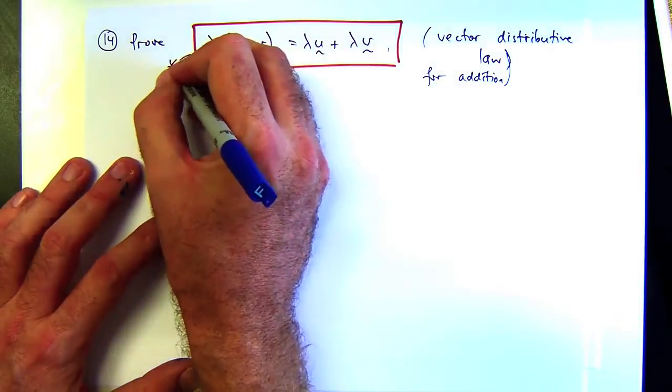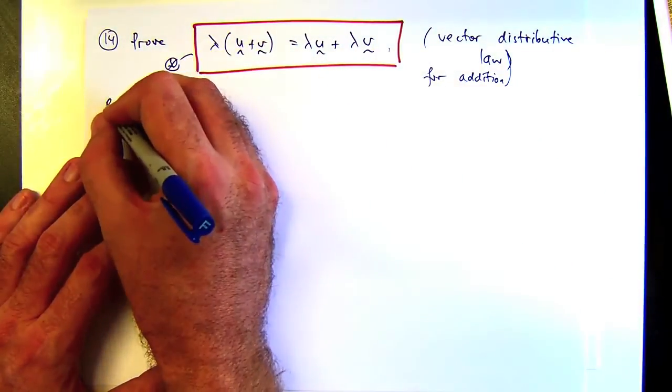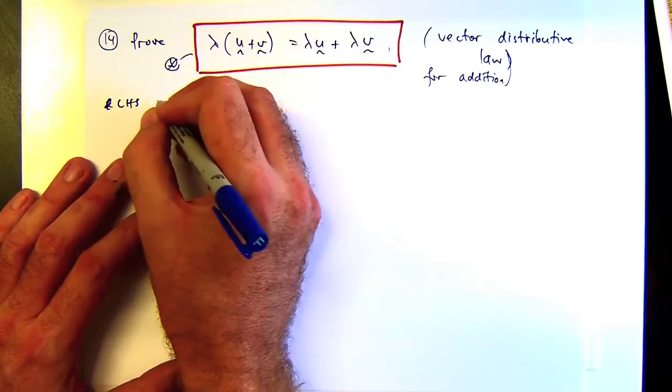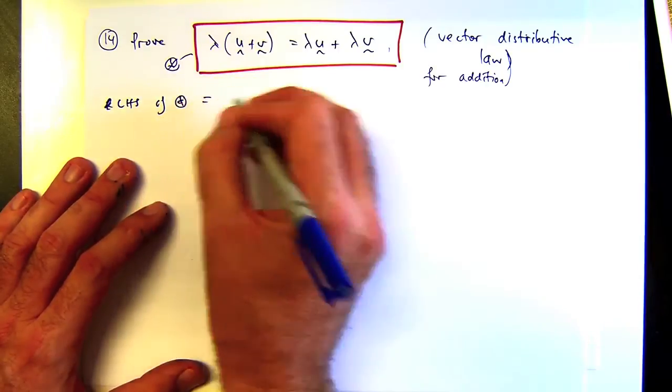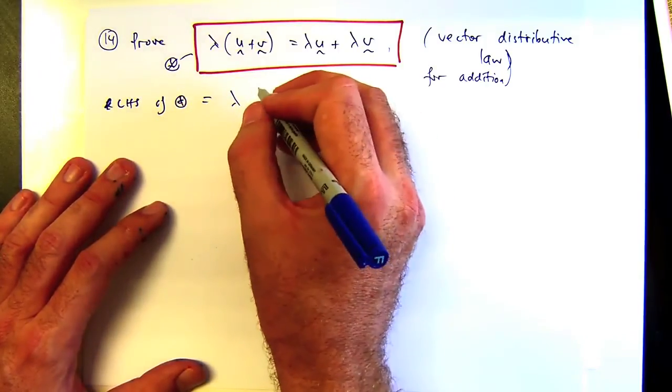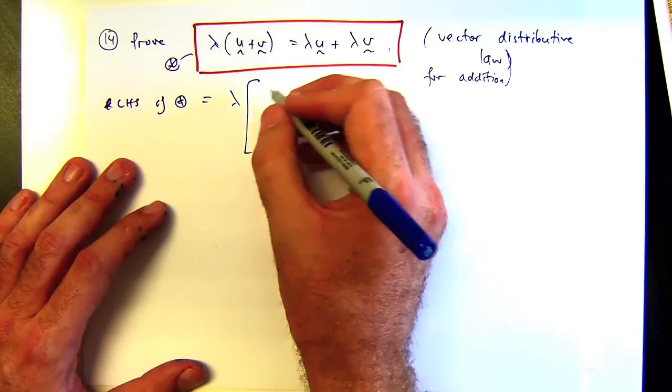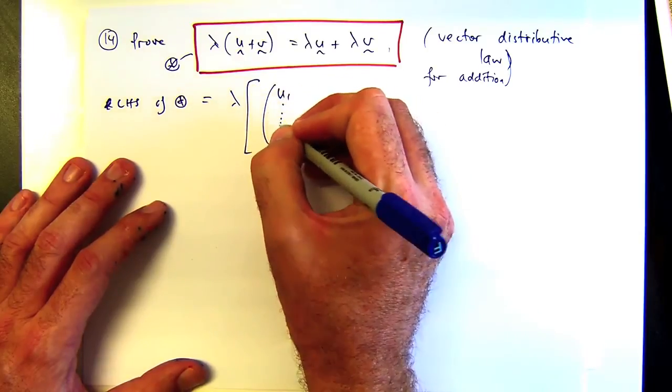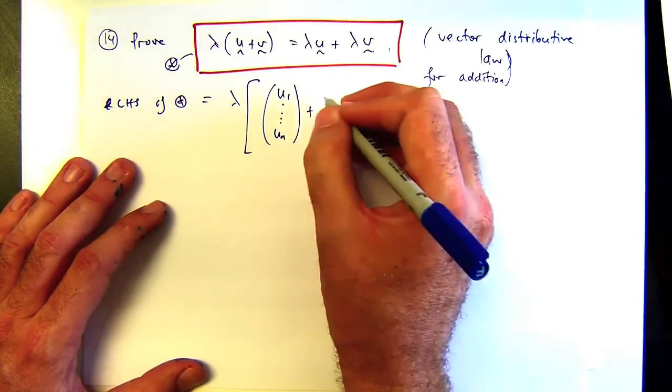So the deal now: let this equal star. The left-hand side of star equals this. So let's write it in component form, or as a column if you like, with the components.